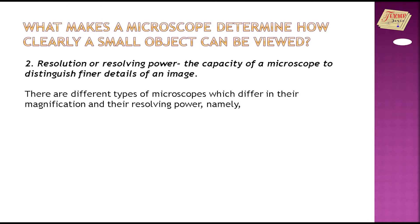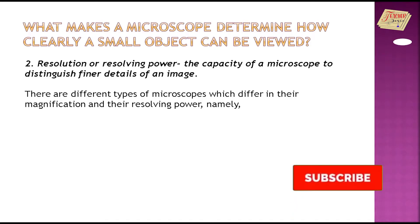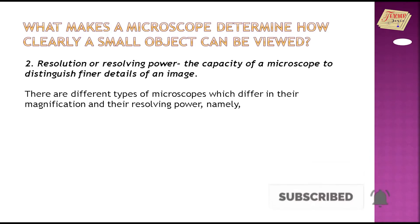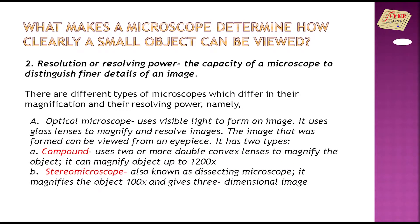2. Resolution or resolving power — the capacity of a microscope to distinguish finer details of an image. There are different types of microscopes, which differ in their magnification and their resolving power. Optical microscope uses visible light to form an image. It uses glass lenses to magnify and resolve images. The image that was formed can be viewed from an eyepiece. It has two types.